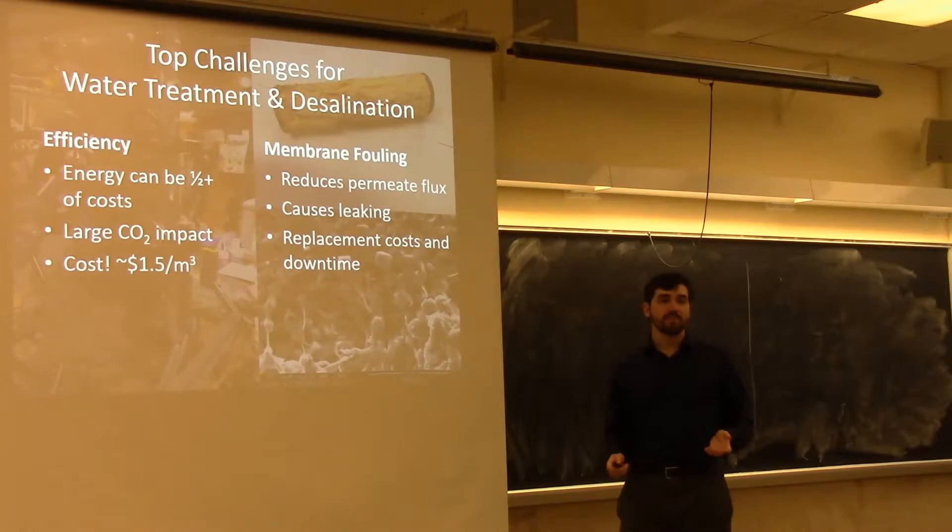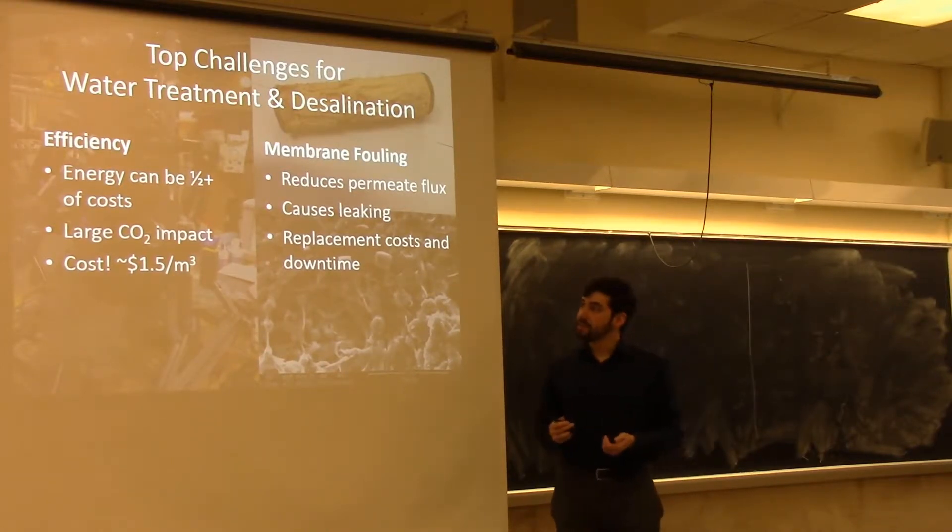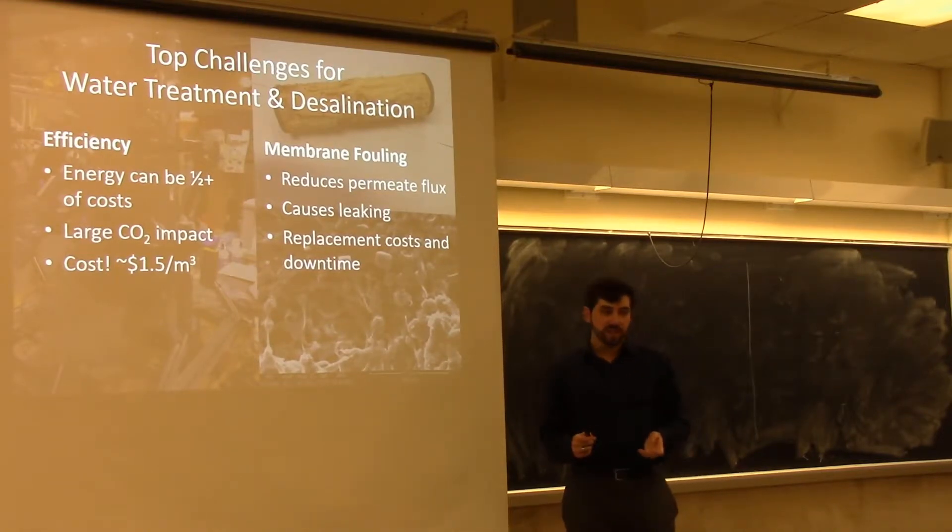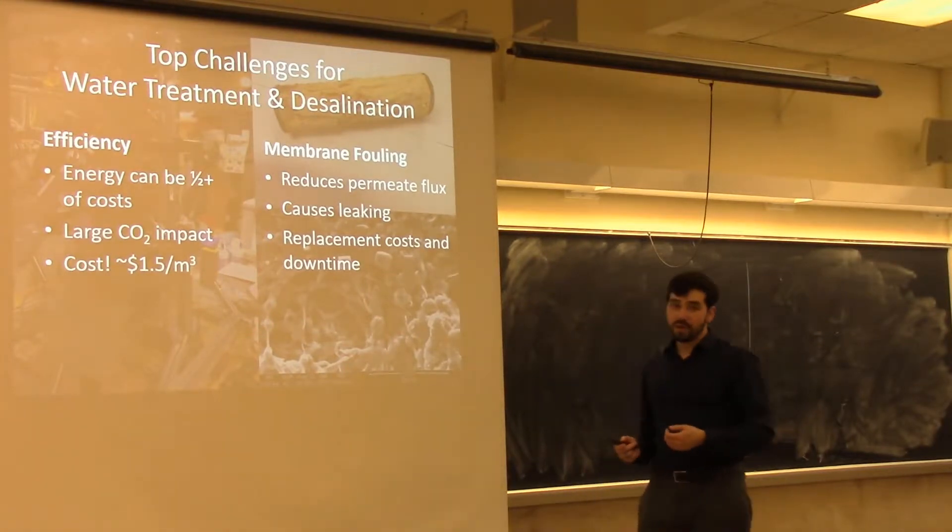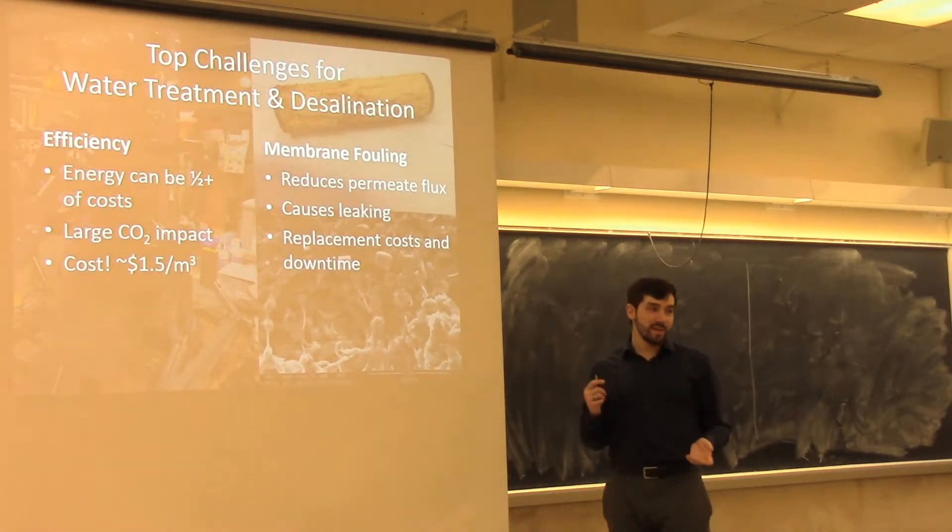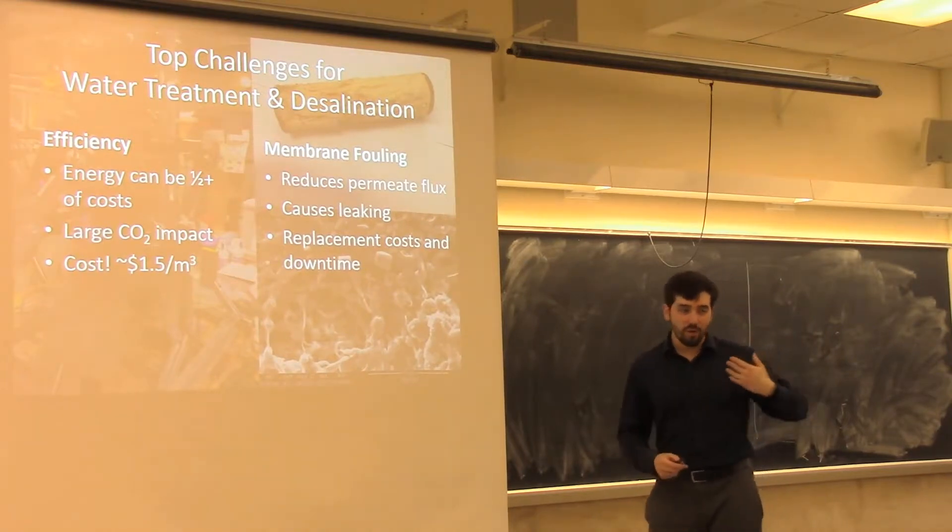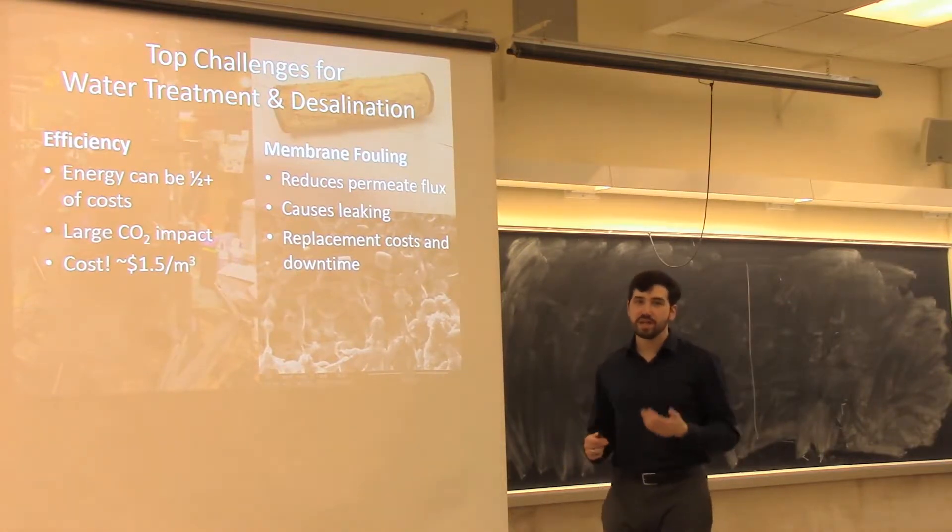What are the top challenges for desalination? To implement desalination membrane technology, specifically for reverse osmosis, our main challenges are the energy efficiency as well as the membrane fouling. The efficiency is not only a cost issue, but also many of these plants are powered by electric grids that are not renewable. So the CO2 impact is substantial. In the U.S., the typical cost is about $1.50 per kilowatt-hour as of the time of this talk, but it can be quite variable.